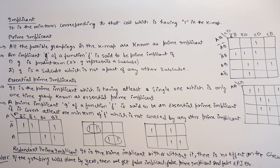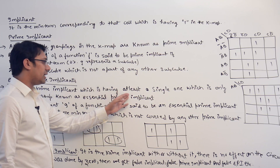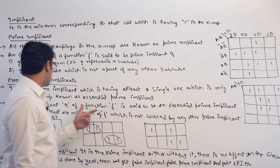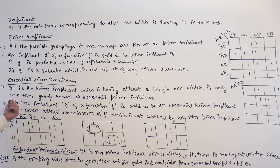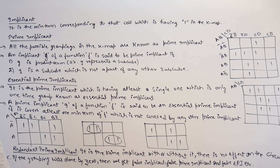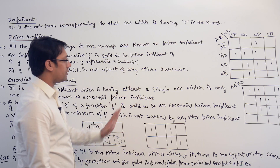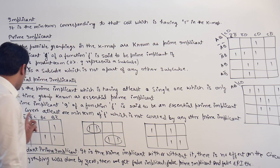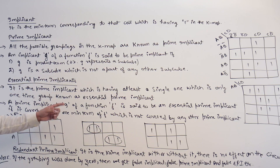An essential prime implicant is a prime implicant which has at least a single one that is only one-time grouped. A prime implicant G of function F is said to be an essential prime implicant if it covers at least one min-term of F which is not covered by any other prime implicant.